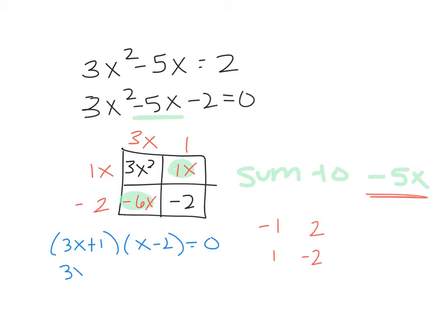And so now from here, solving just means I need to use the zero product property to split it up. And I get negative one-third and 2.